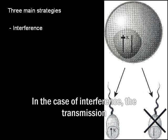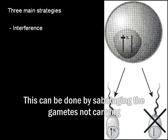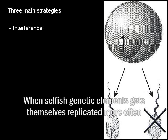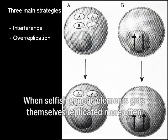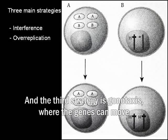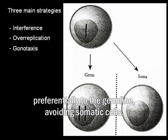In the case of interference, the transmission of the alternative allele is disrupted. This can be done by sabotaging the gametes not carrying a copy of the allele, or even killing the offspring that don't. When selfish genetic elements get themselves replicated more often than other genes in the organism, we call it over-replication. And a third strategy is gonotaxis, where the genes can move preferentially to the germline, avoiding somatic cells.